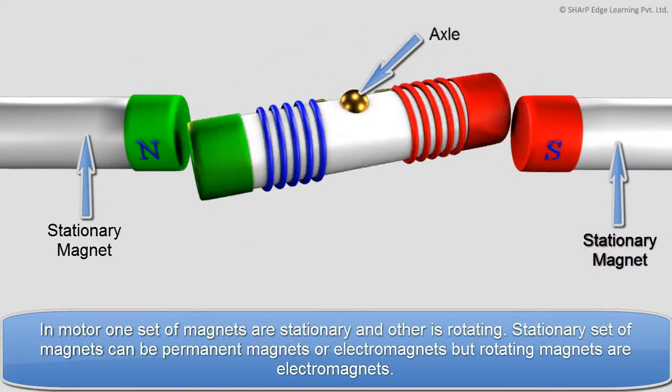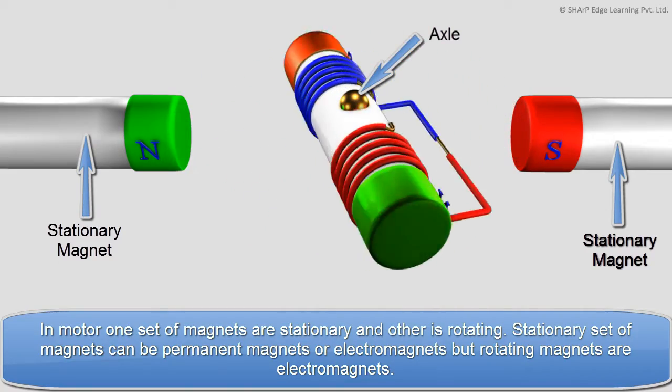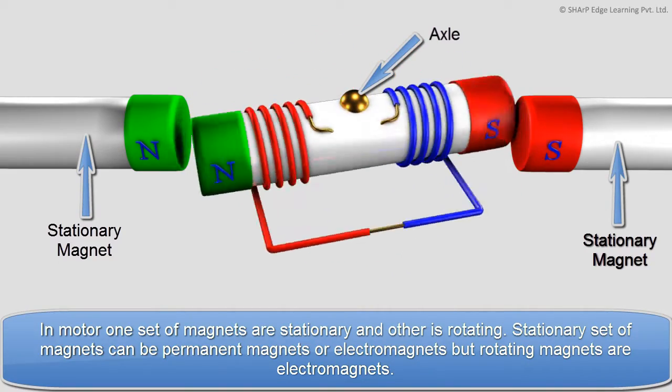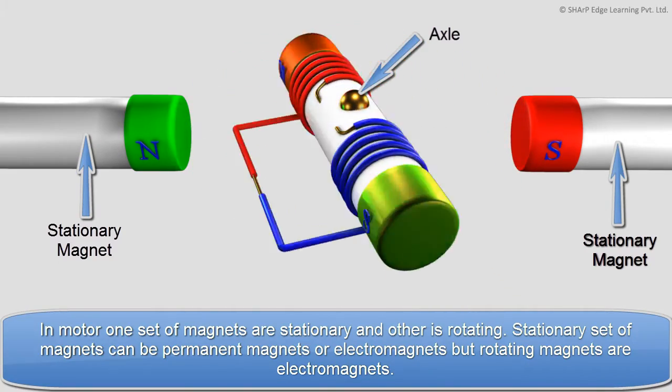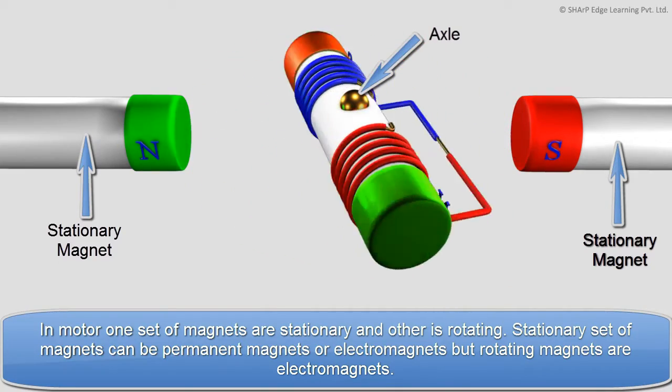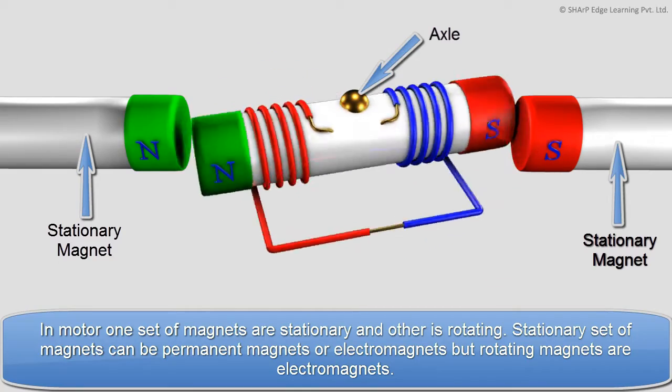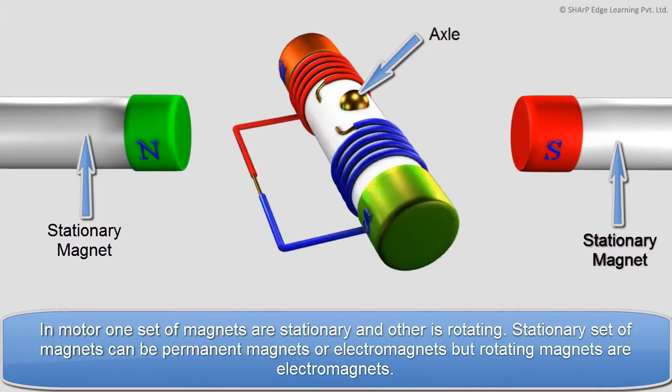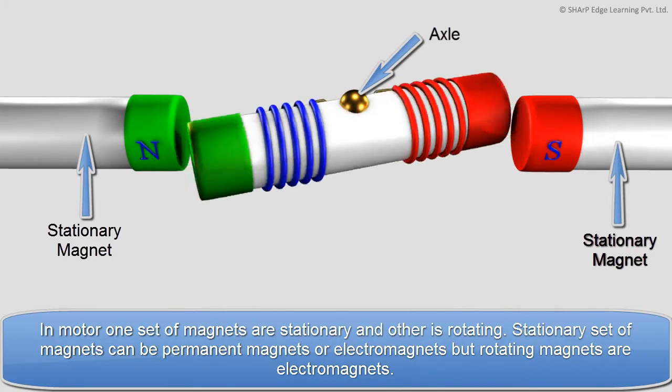In motor, one set of magnets are stationary and the other is rotating. Stationary set of magnets can be permanent magnets or electromagnets, but rotating magnets are electromagnets.